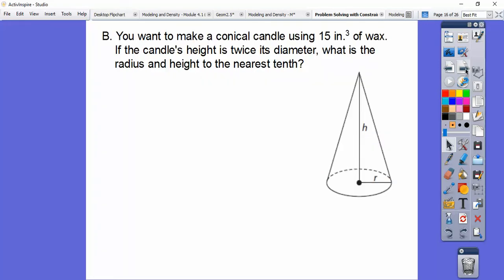Let's try another one here. So we want to make a conical candle using 15 inches cubed of wax. So if the candle's height is twice the diameter, what's the radius and the height to the nearest tenth? So remember, the height is twice the diameter. I think I did capital D in the last one, but that's all right. So the diameter is twice the radius, so the height is equal to 4 times the radius right there.